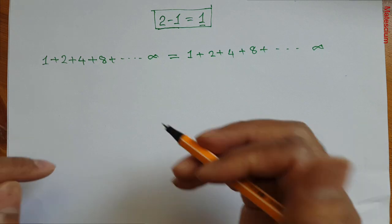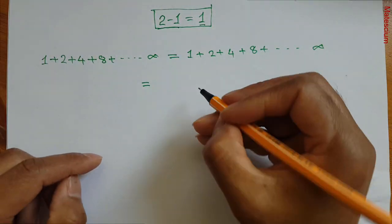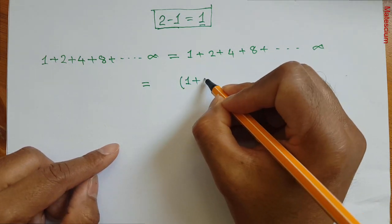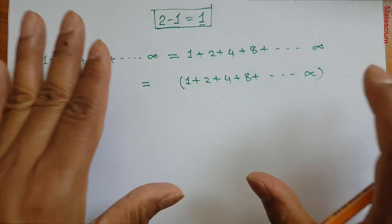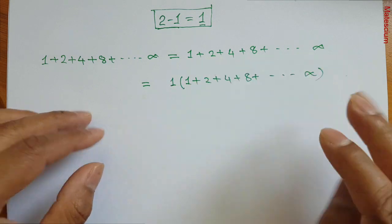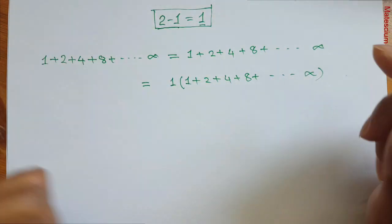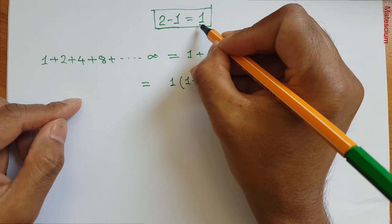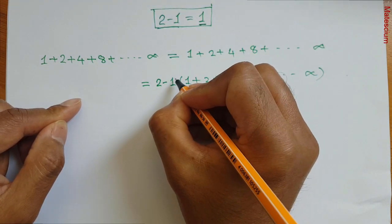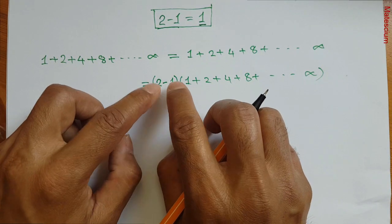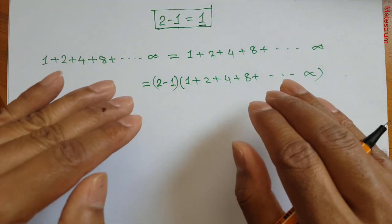There is no contradiction. Interestingly, I can multiply this part by 1, rewriting: 1 plus 2 plus 4 plus 8 plus up to infinity, multiplied by 1. If I multiply anything by 1, it remains the same. As I told you before, I can substitute this 1 by 2 minus 1. That means I can rewrite this part as 2 minus 1, and 1 multiplied by this infinite series remains the same. So there is no mathematical contradiction up to this point.